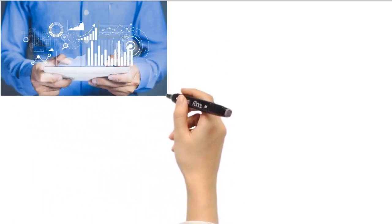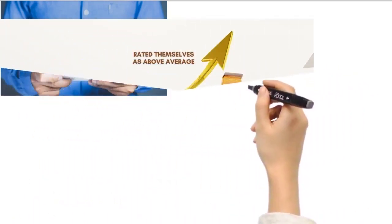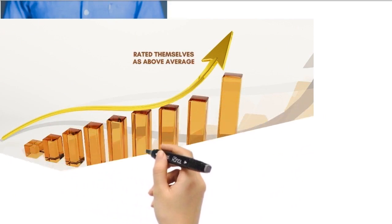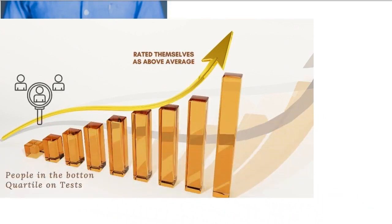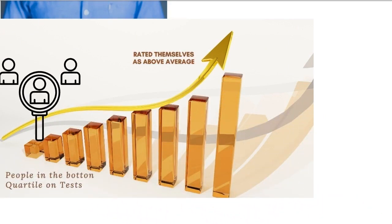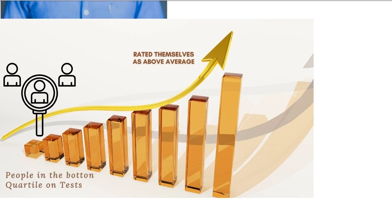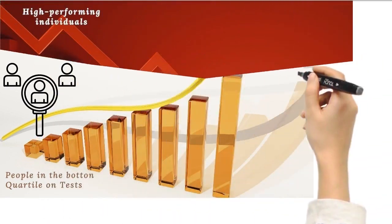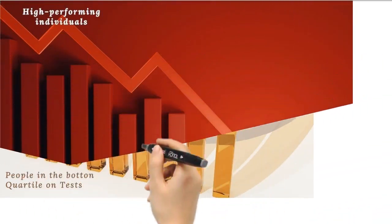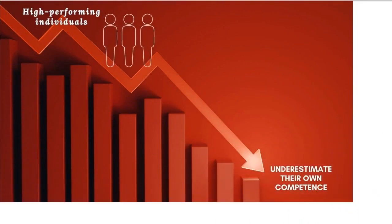Now let's sprinkle some data to spice things up. According to a study by Dunning and Krueger, participants scoring in the bottom quartile on tests vastly overestimated their abilities, rating themselves above average. In contrast, high performing individuals tended to underestimate their competence. It's like a cognitive seesaw where ignorance weighs more than knowledge.